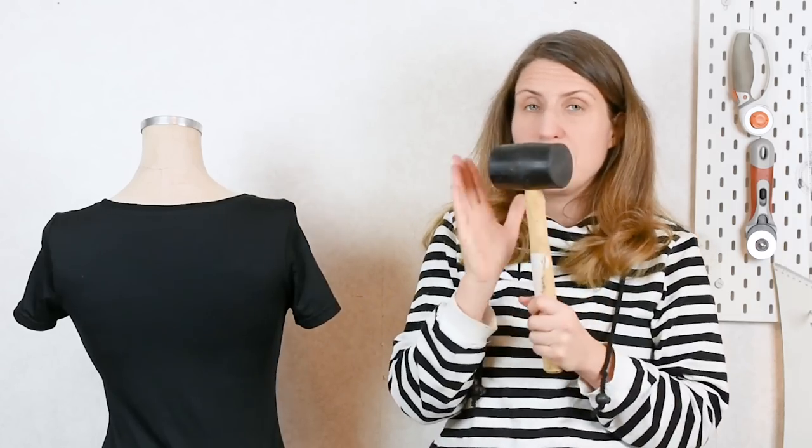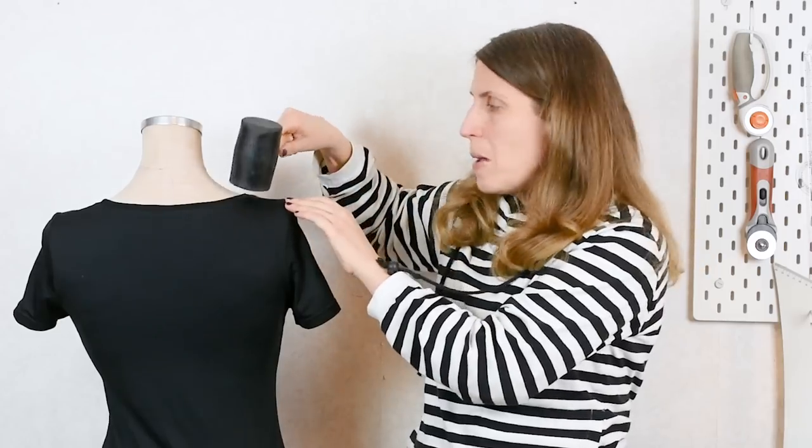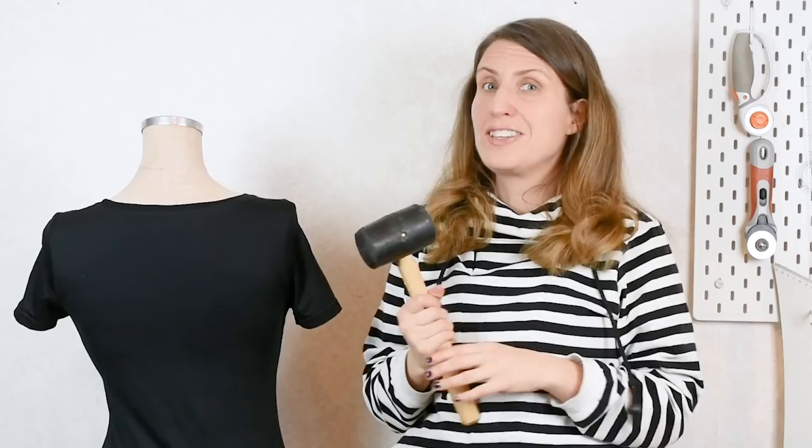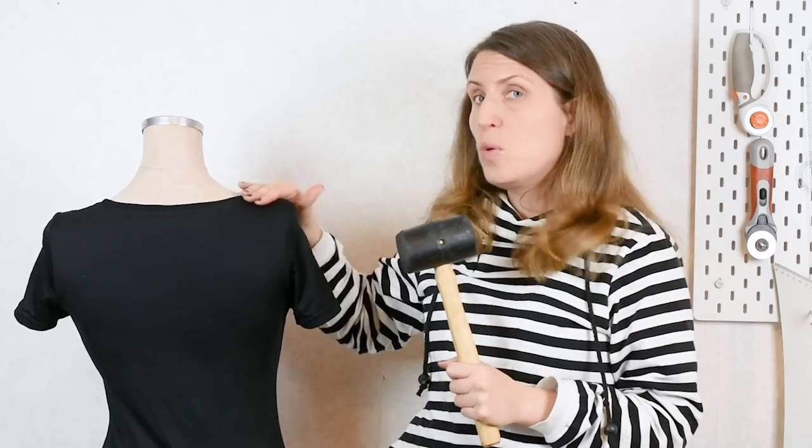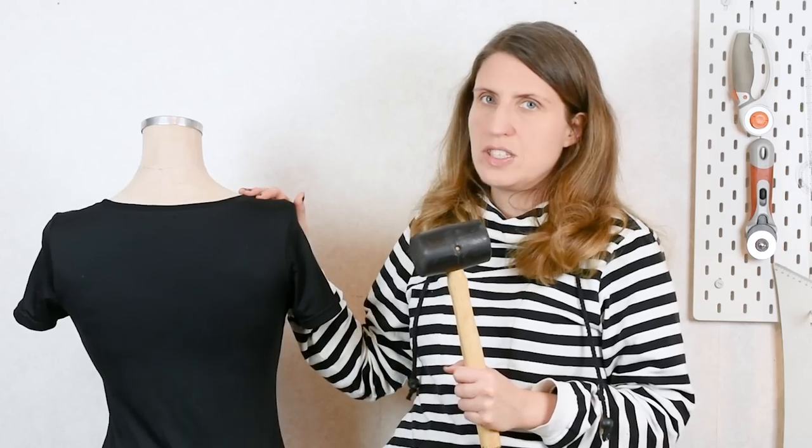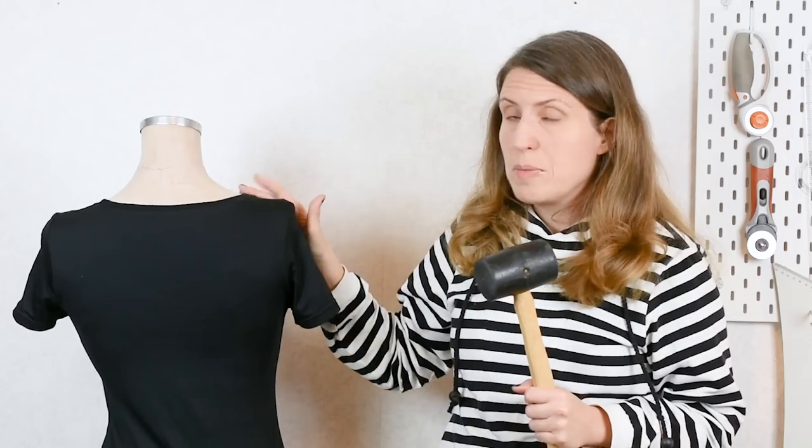Another tip if you are having problems with bulk is actually to use this type of hammer, which is a really good one. It doesn't ruin the fabric in any way—just give the seam allowance a gentle beating like this, and that will actually make a massive difference. It won't alter the fabric, but it will keep the seam allowance flat and nice and make it so much easier to stitch over.